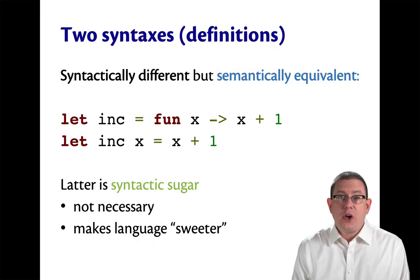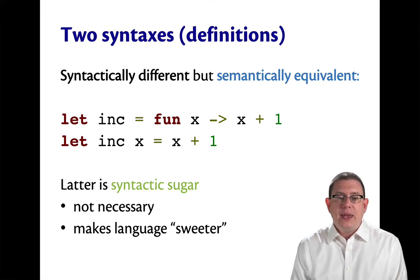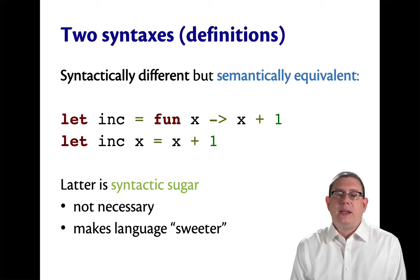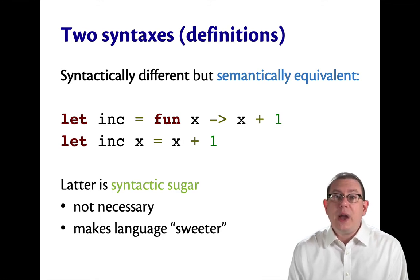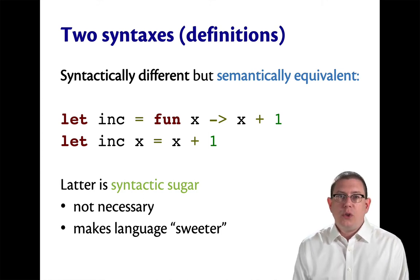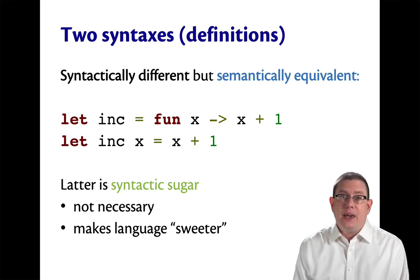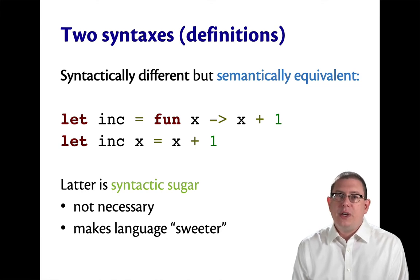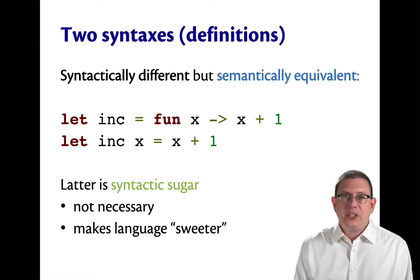We've now seen two pieces of code that are syntactically different but semantically equivalent. `let inc = fun x -> x + 1` is syntactically different from `let inc x = x + 1`, but they mean the same thing — they evaluate the same way. This phenomenon is known as syntactic sugar: when there are two different ways of writing something syntactically in a language and they mean the same thing, but one of them is a little easier to use. In fact, you could get away without one of them, but your life would be a little less sweet without it.